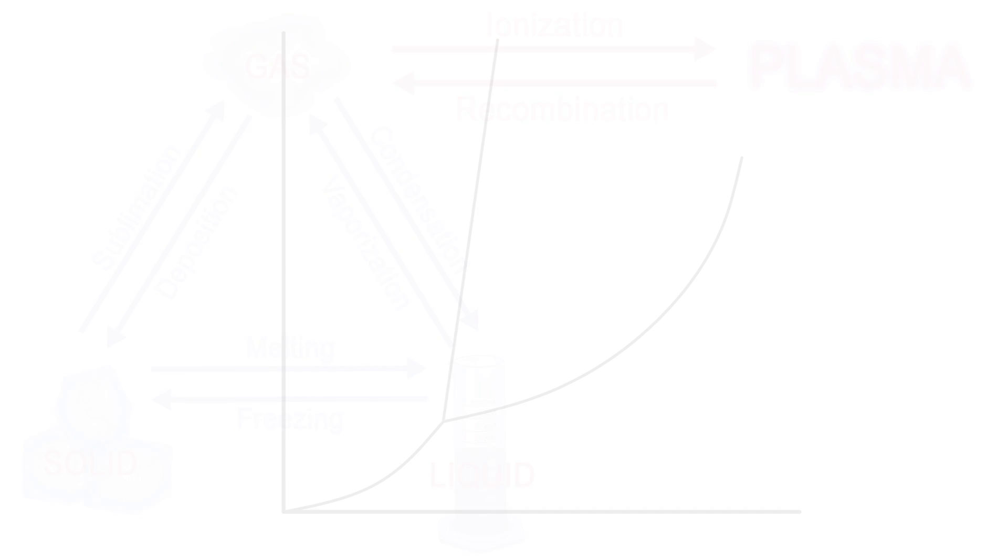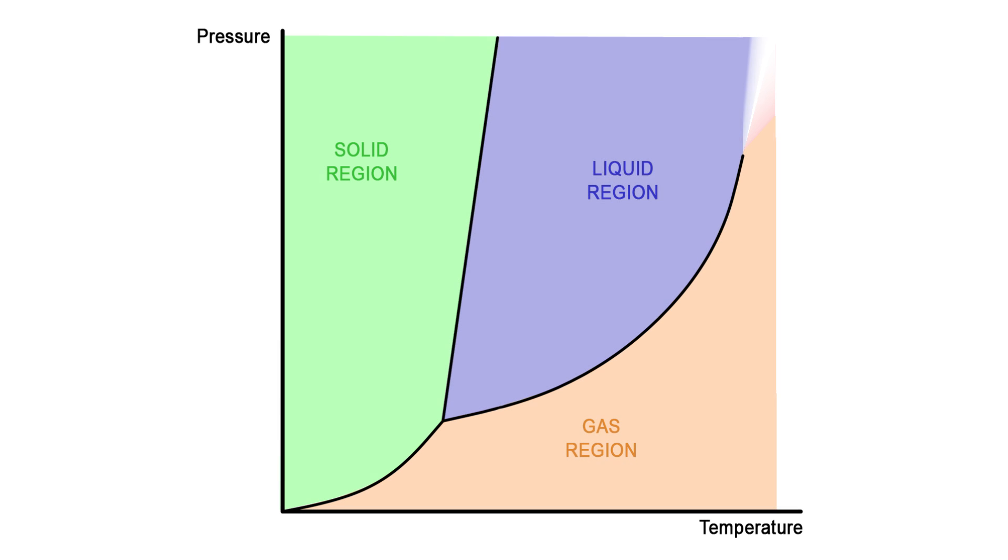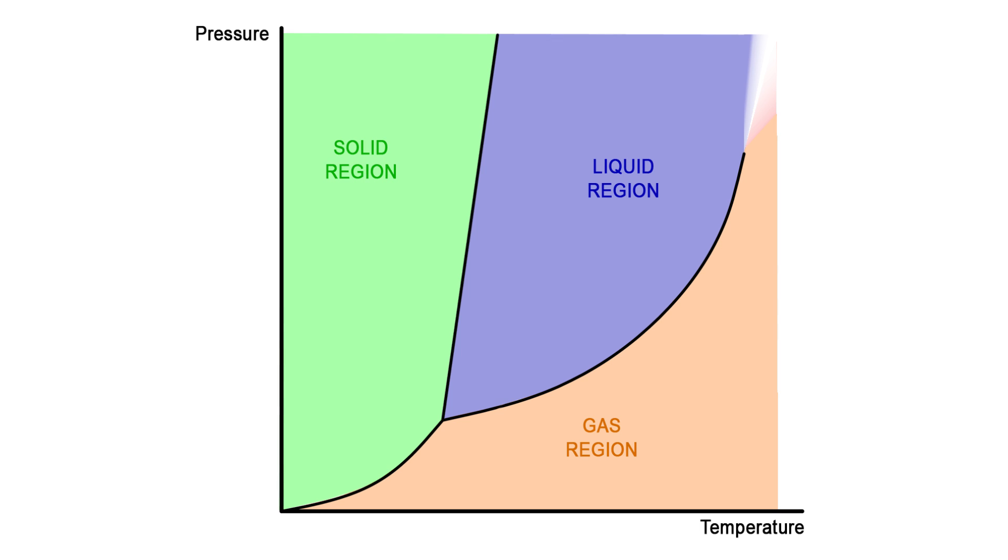We tend to think of a state of matter as depending only on temperature, but it also depends on pressure. This phase dependence is typically shown on a pressure-temperature, or PT diagram, where the regions identify pressure and temperature values which would cause the substance to be in a particular state.